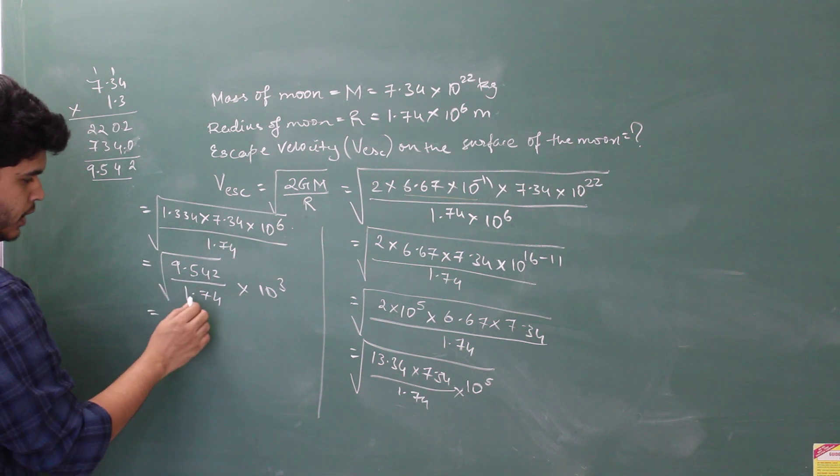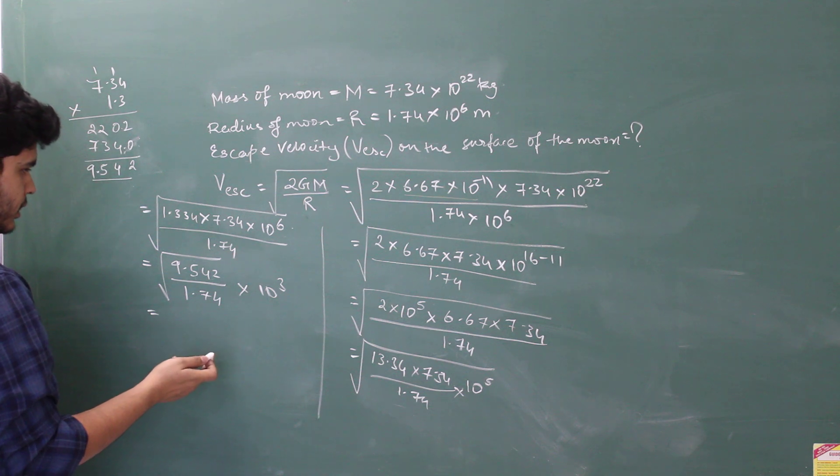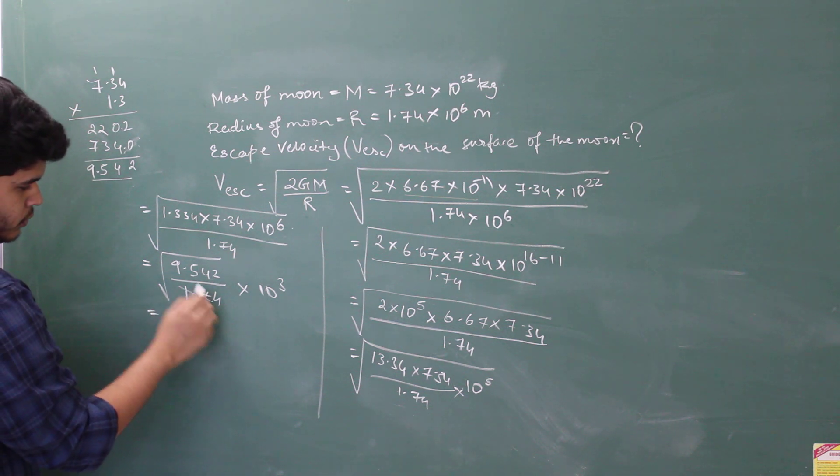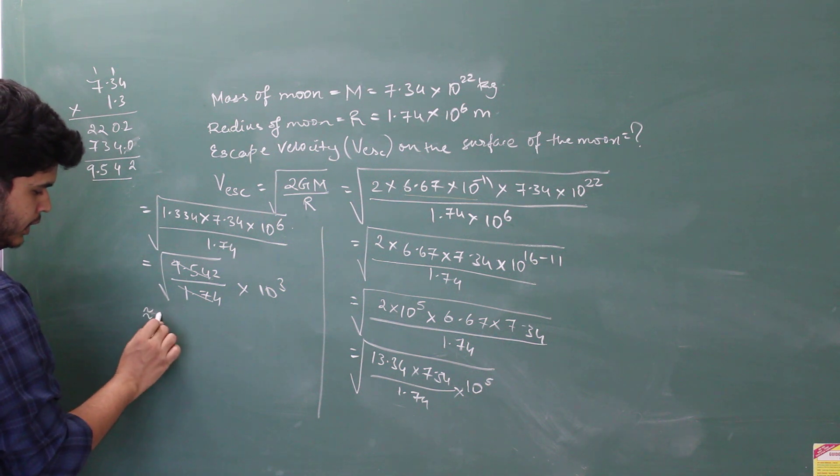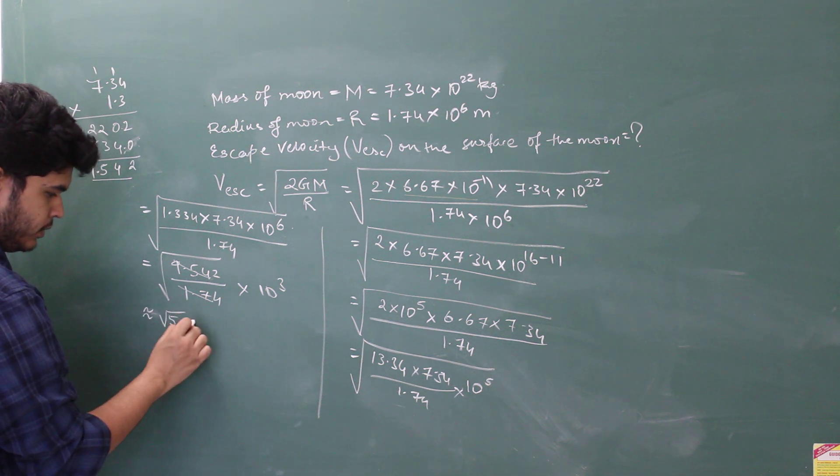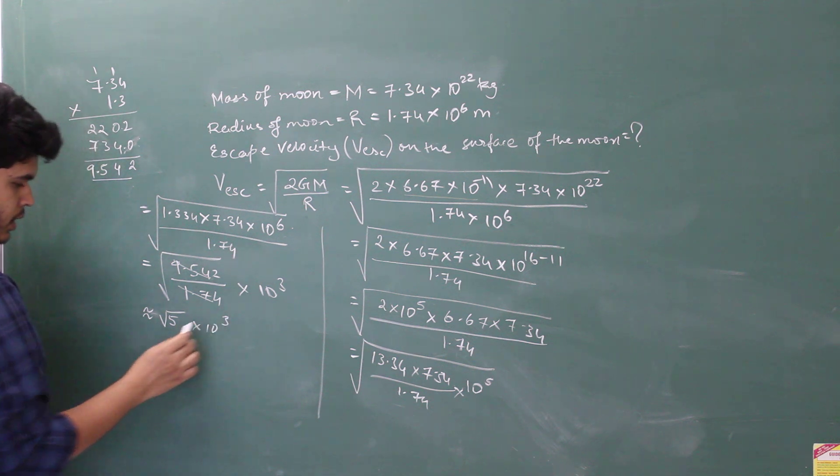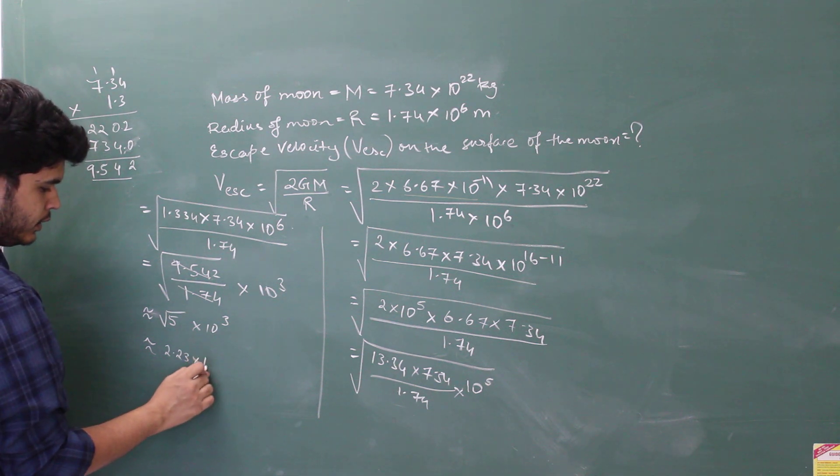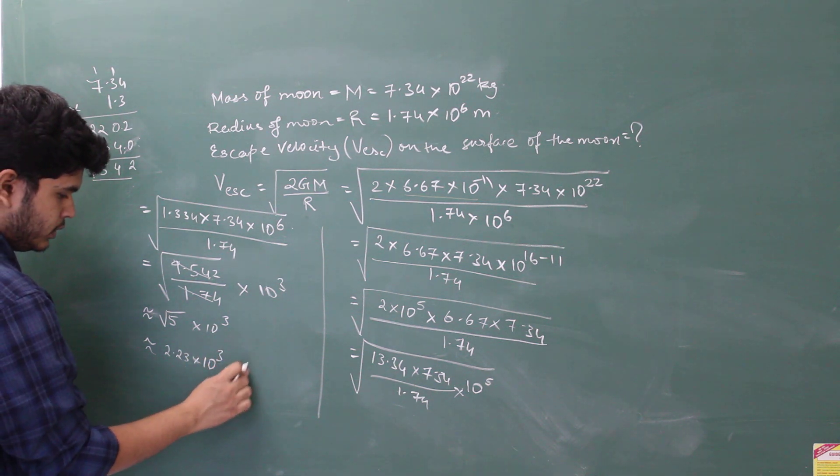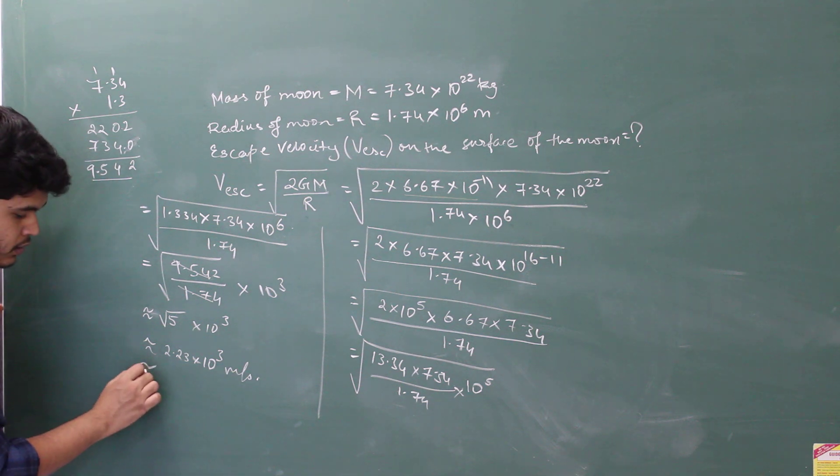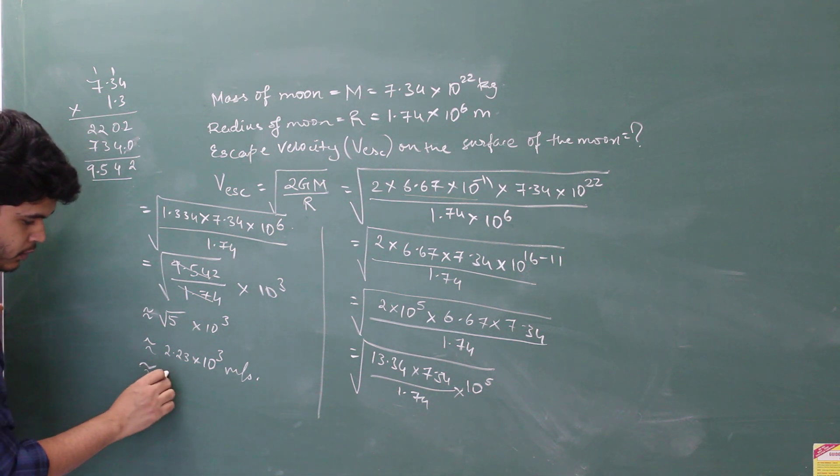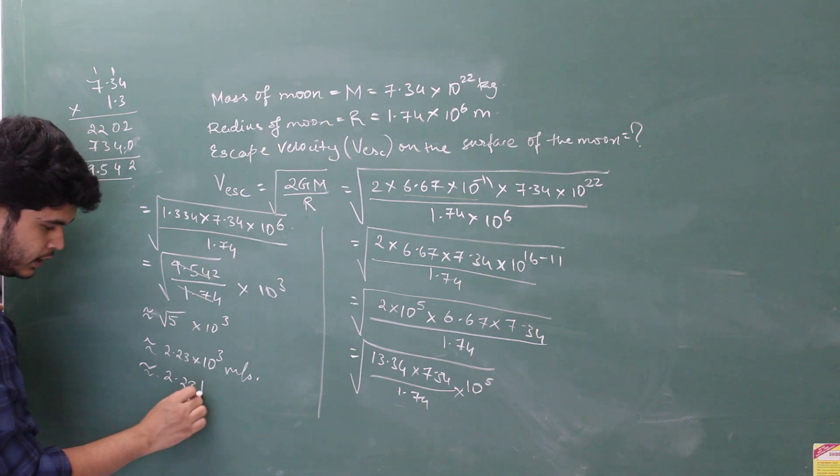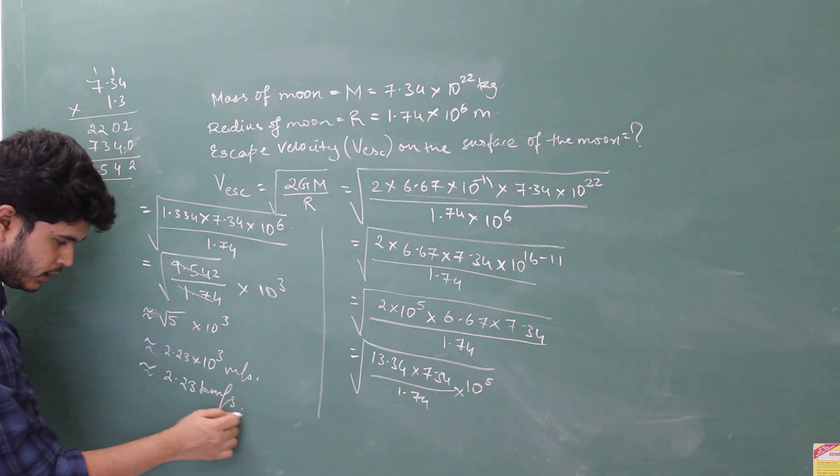Equal to 9.542 divided by this. What do you get? It would be approximately somewhere over 5. Right? If you cut it, your answer would be approximately √5 × 10^3. √5 ki value kya hai? 2.2, 3 or 2.5. So it will be 10^3 meter per second. This could be your answer, approximate answer. So, 2.23 kilometer per second would be your final answer.